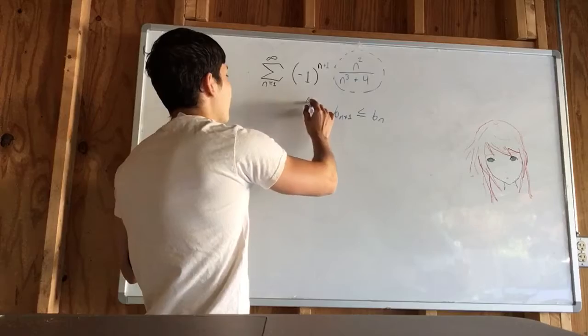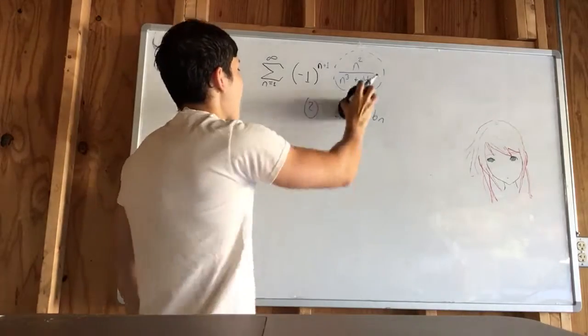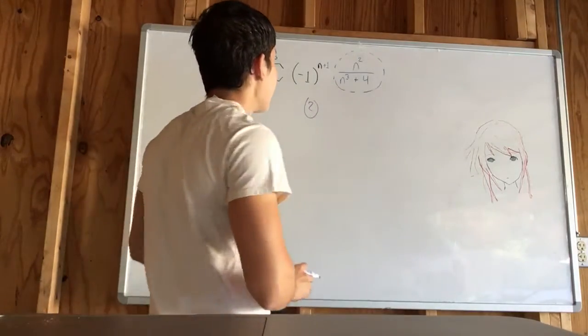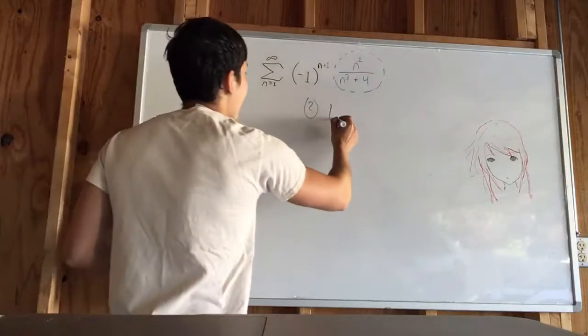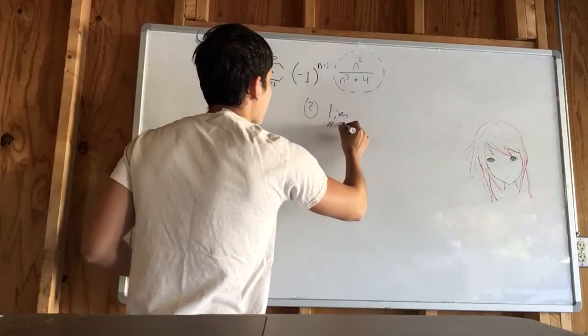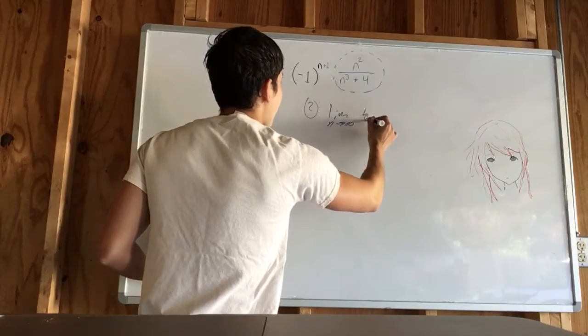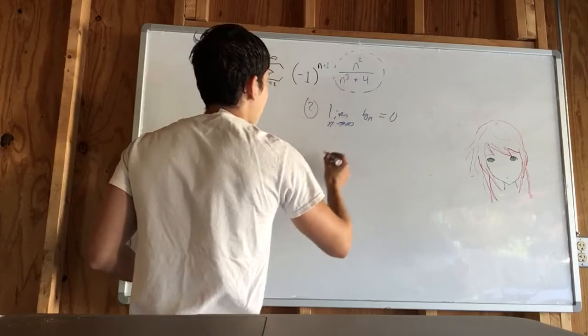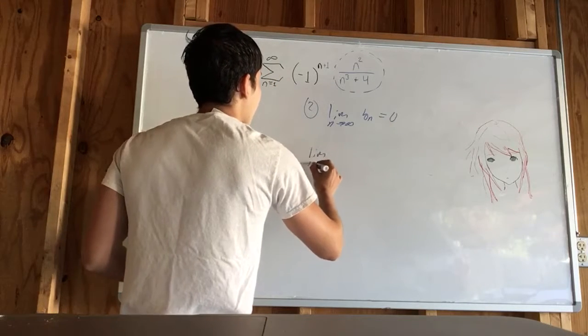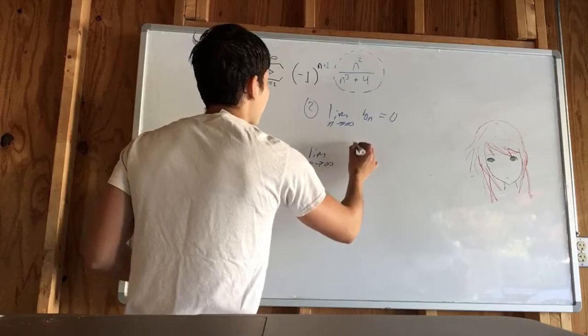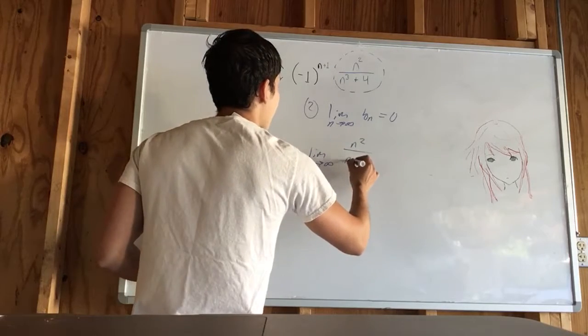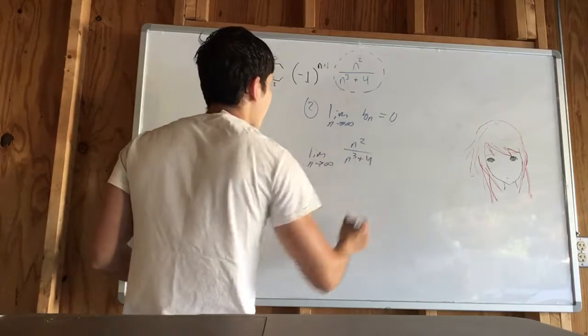The next stage is to take the limit as n approaches infinity of b sub n, and have that equal zero. So, limit as n approaches infinity of n squared over n cubed plus 4.